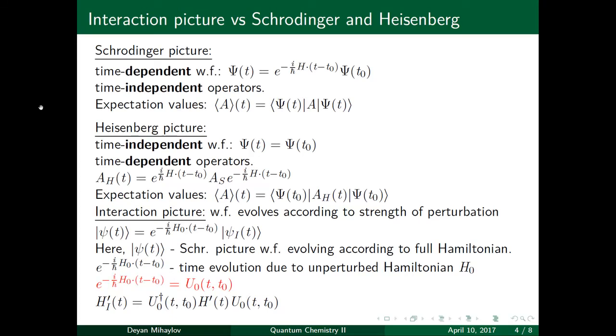So, what is the interaction picture? Well, first, let's remind ourselves of the Schrödinger picture, where one has a time-dependent wave function, and the operator is time-independent. And to compute the expectation value of an operator, you just take the inner product of the wave functions times the operator. So, to get the wave functions as a function of time, one solves the Schrödinger equation.